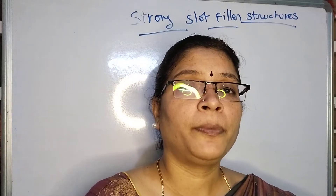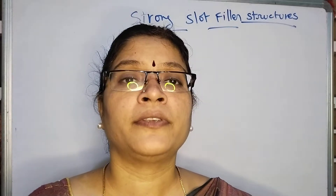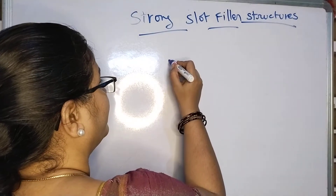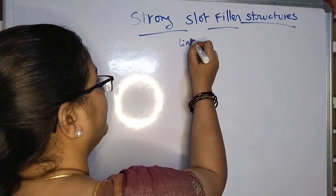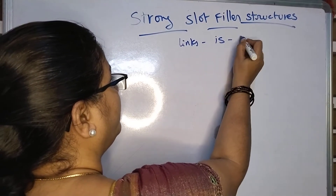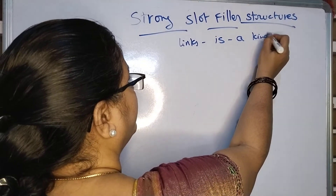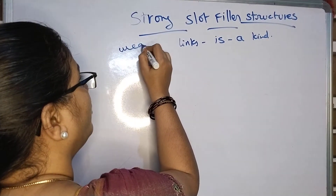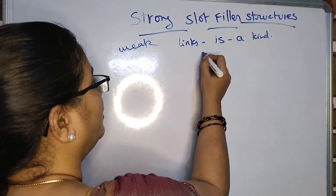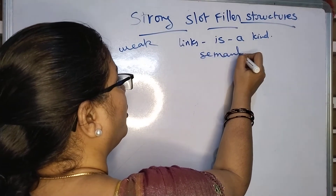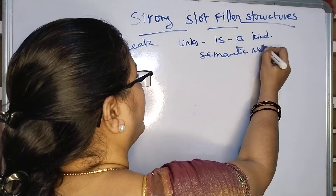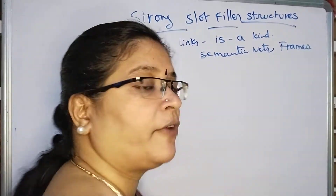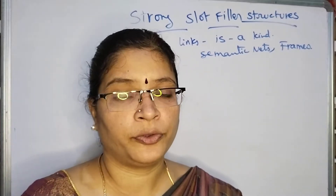The purpose of the weak slot filler structures in knowledge representation is to represent some set of links and easy kinds of relationships. The examples of these weak slot filler structures are semantic nets and frames. These two things we have already completed in our past videos.